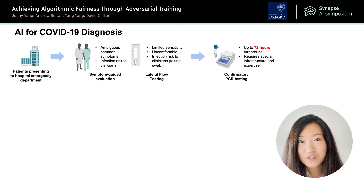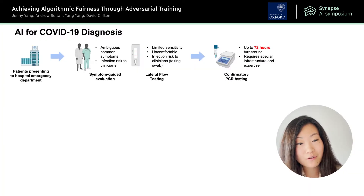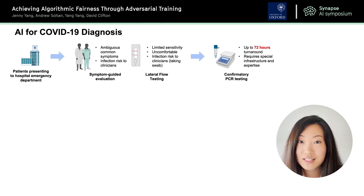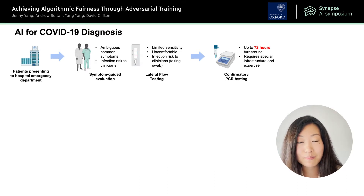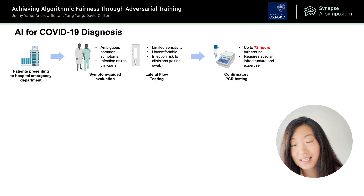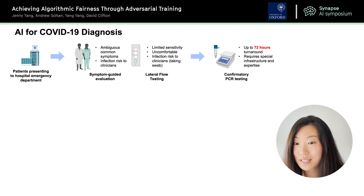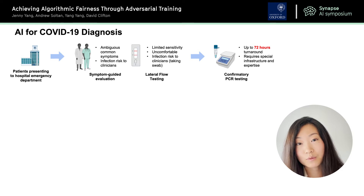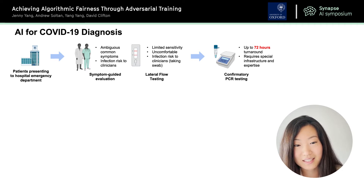To start, I'll introduce the bigger problem that we're trying to solve, which is using artificial intelligence or AI for COVID-19 diagnosis. Typically when patients think they may have COVID-19, they'll present to hospital emergency departments and there they'll go through symptom guided evaluation, get lateral flow testing, and sometimes be asked to get confirmatory PCR testing which is considered the gold standard for COVID-19 diagnosis.